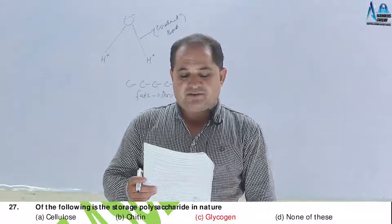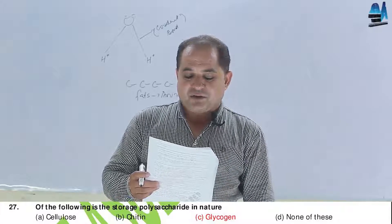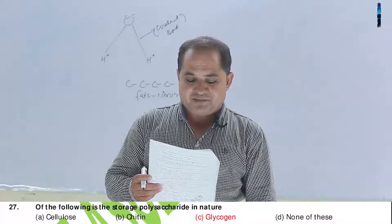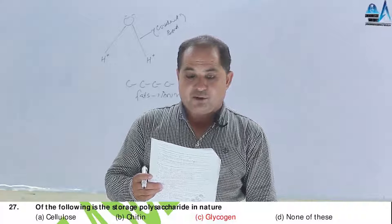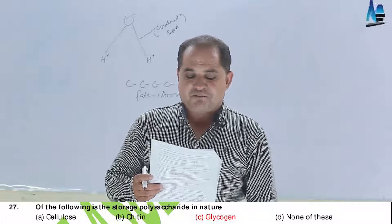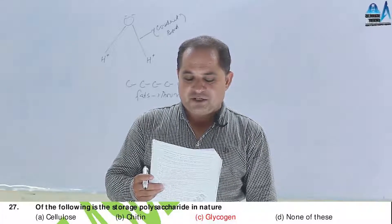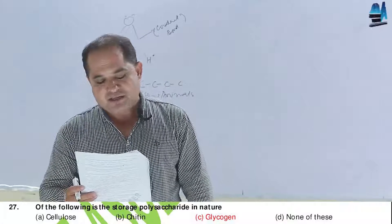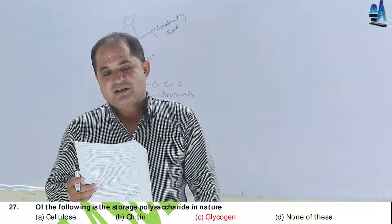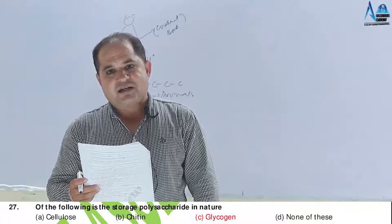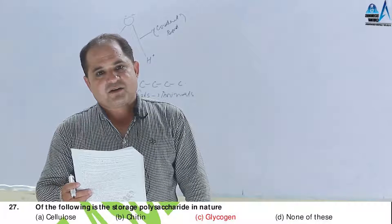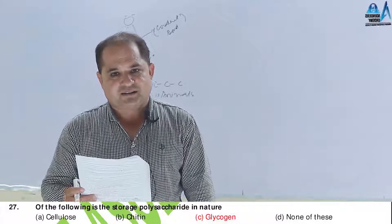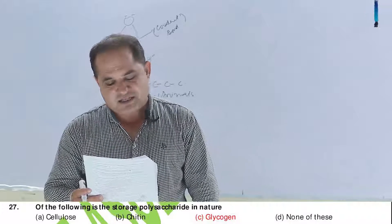Question number 27. Which of the following is a storage polysaccharide in nature? A, cellulose; B, chitin; C, glycogen; D, none of these. Answer should be glycogen — it is a storage polysaccharide stored in the liver and muscle in human beings.